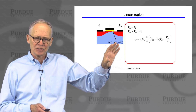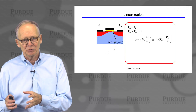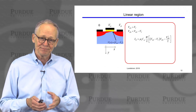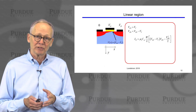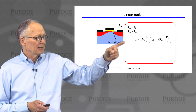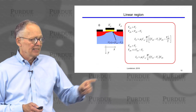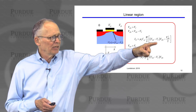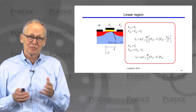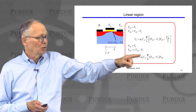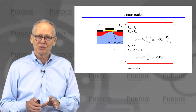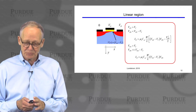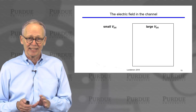We've derived the complete IV characteristics of this square law device. When the drain-to-source voltage is low enough that pinch-off does not occur, we have the triode regime expression. When V_DS exceeds the critical pinch-off voltage V_G minus V_T, the device is pinched off and we have the square law saturated current independent of drain voltage. Looking more carefully at the linear regime — very small drain-to-source voltage — the V_DS² term becomes negligible, and what remains is exactly the simple linear region expression we derived in the previous lecture. So this result is consistent with and generalizes the previous results.